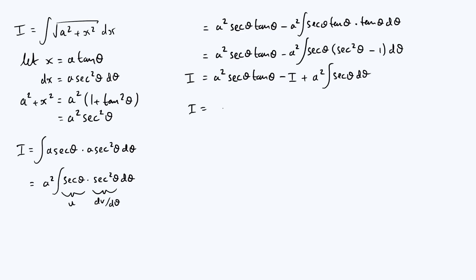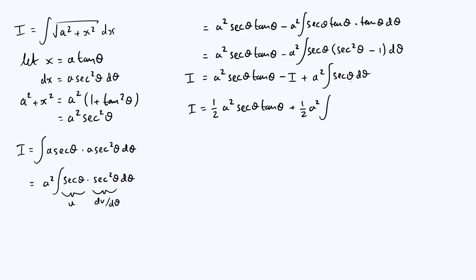So I equals one half times the uv term, plus one half a squared times the integral of sec θ. To integrate sec θ, either use a standard result or apply a trick: multiply sec θ by (sec θ plus tan θ) over (sec θ plus tan θ) — which is multiplying by one — making it into the fraction (sec squared θ plus sec θ tan θ) over (sec θ plus tan θ).